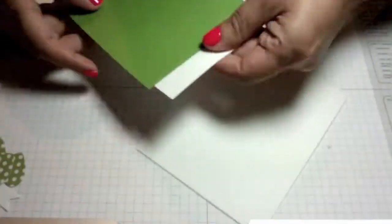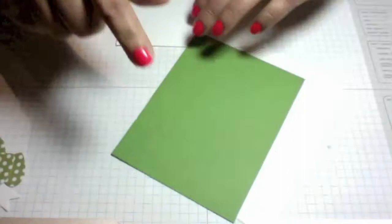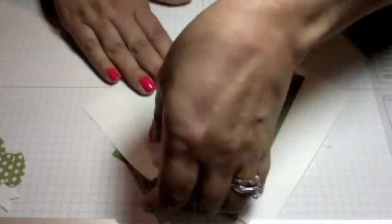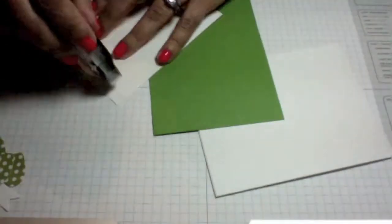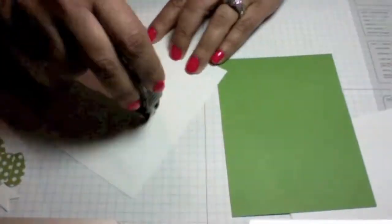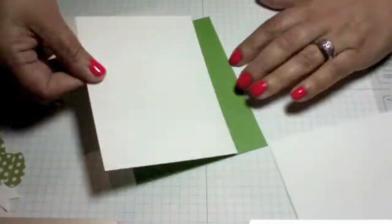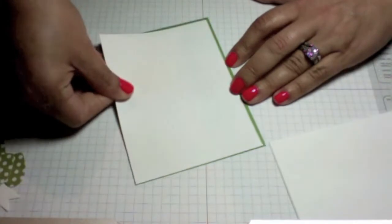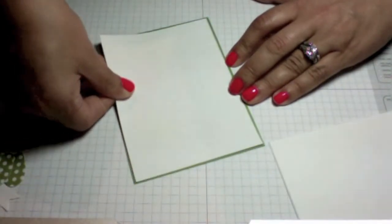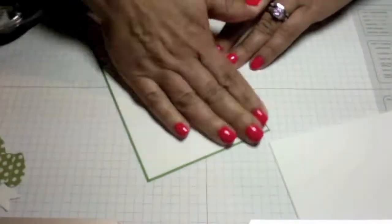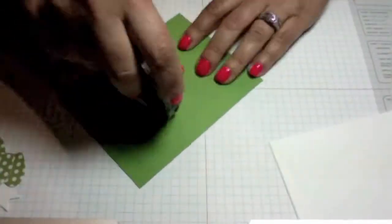To get started here I have some white layers along with my white base and gumball green. I'm going to go ahead and layer them, starting with my white layer and layering that on top of my gumball green. All the measurements for the layers will be listed over at my blog.